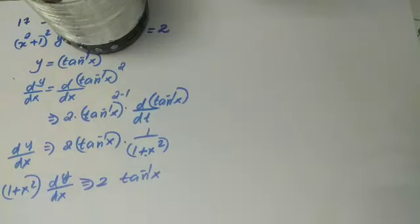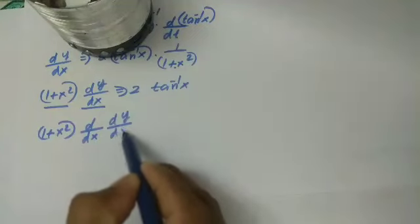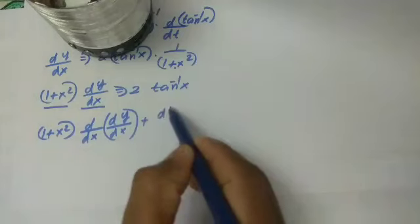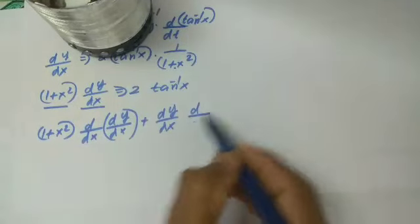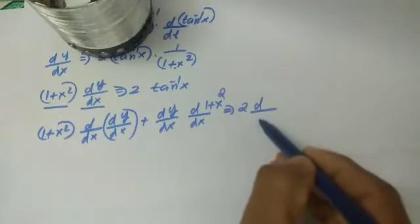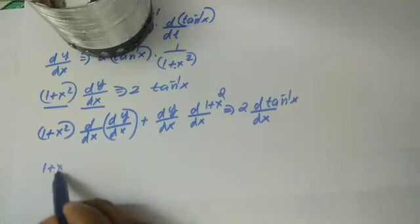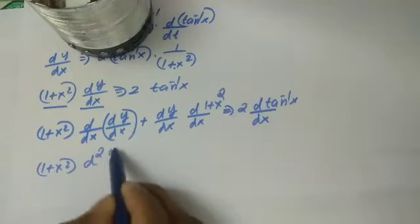Multiply both sides: 1 plus x square into dy by dx equal to 2 into tan inverse x. Now differentiating again: 1 plus x square into d by dx of dy by dx plus dy by dx into d by dx of 1 plus x square equals 2 into d by dx of tan inverse x.